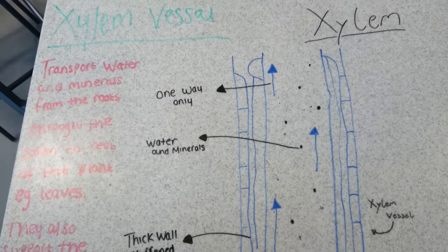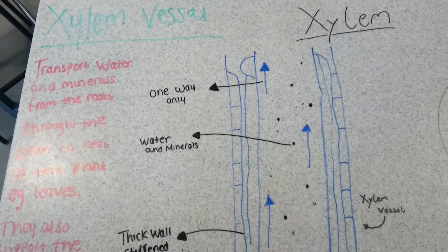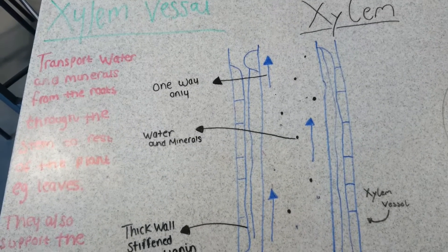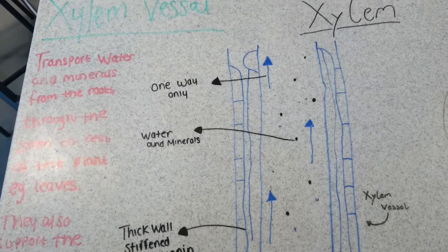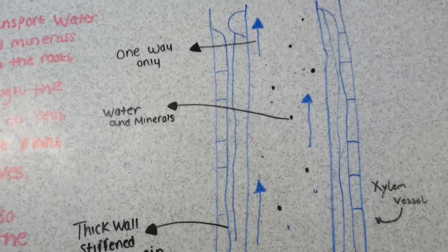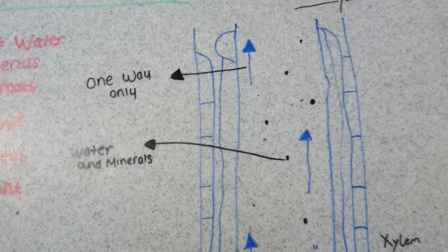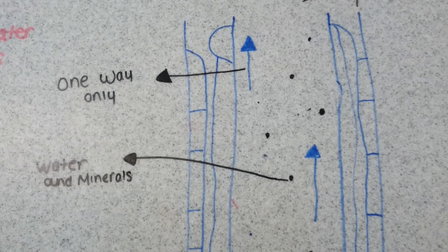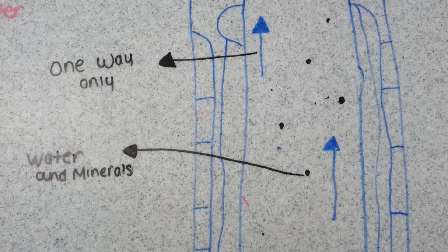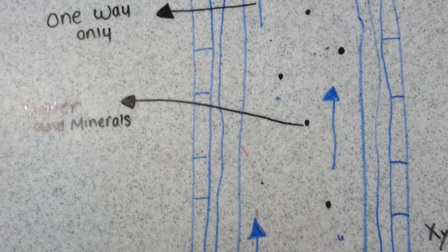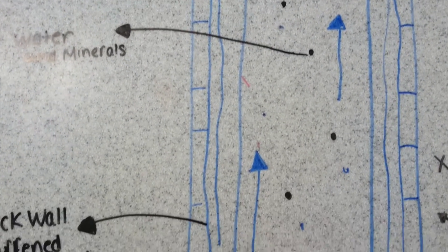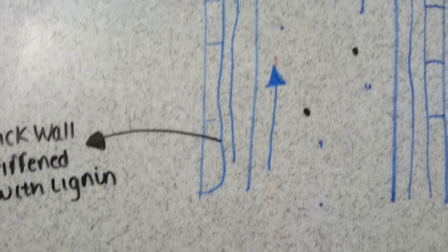This is the diagram of the xylem vessel. It shows that it's one way only and it contains water and minerals, and they also have thick stiffened walls with lignin.